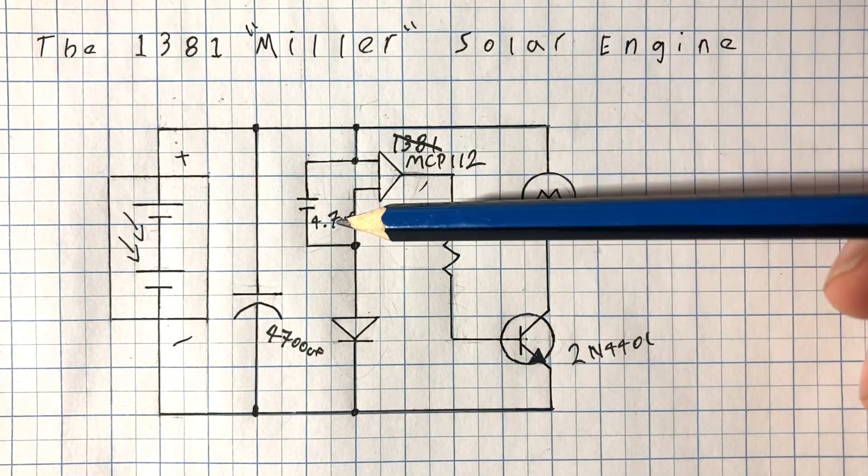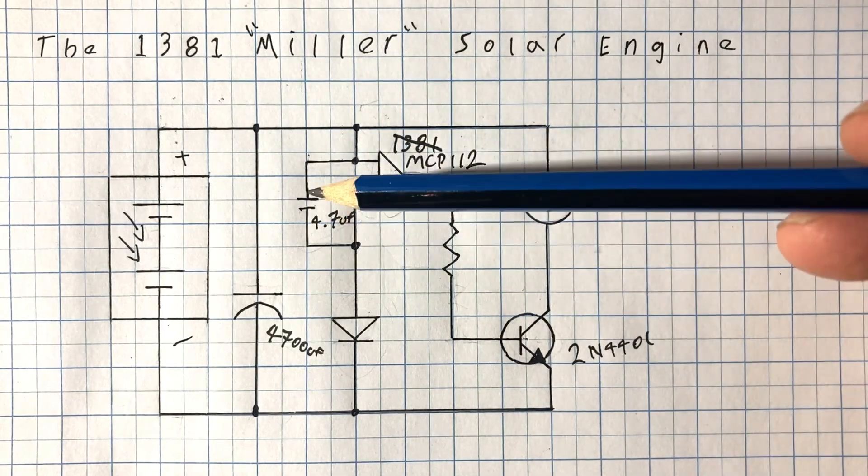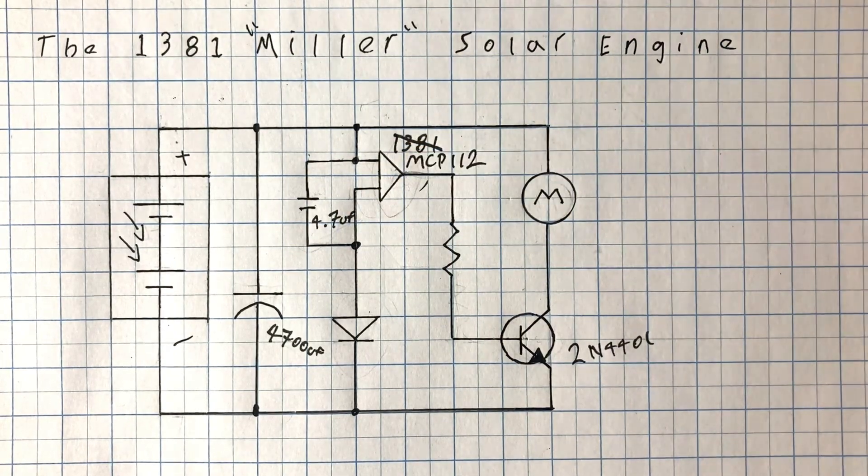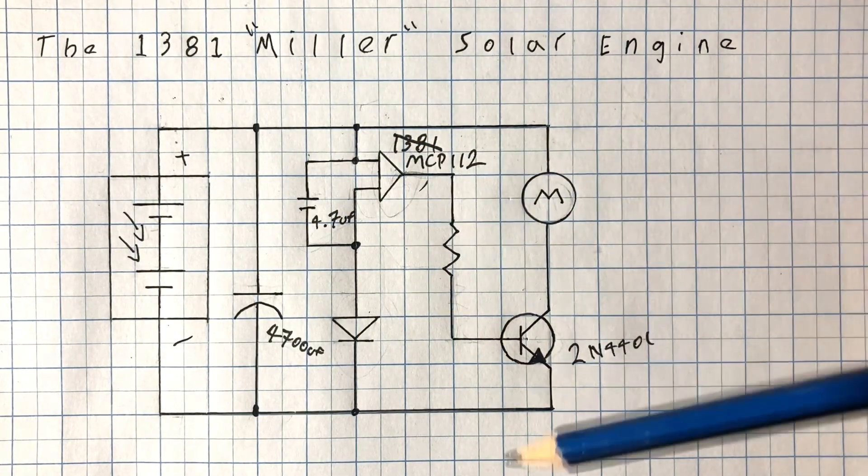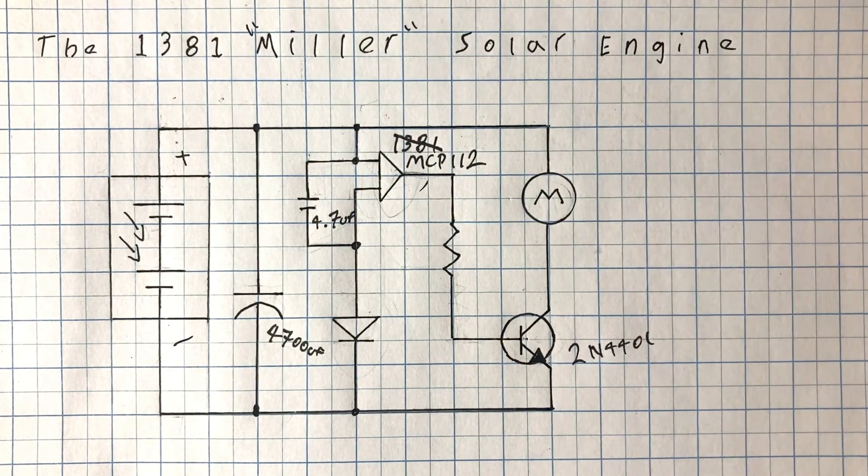The great thing about this is we can tune the size of this capacitor to control how long the circuit stays on for. A really big one here will mean this sees a higher voltage for longer and keeps the circuit running. A really small one means we can tune it to have short pulses if we want.